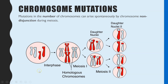So first of all, just what we mean by chromosome mutations. This is where there is a change in the number of chromosomes. And just like with gene mutations, this change happens spontaneously, by a process called non-disjunction in meiosis.